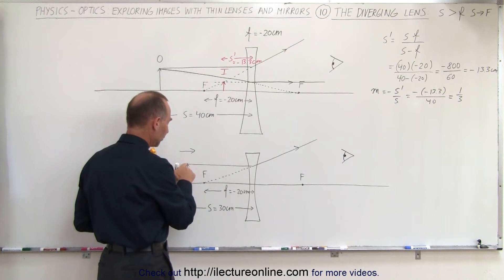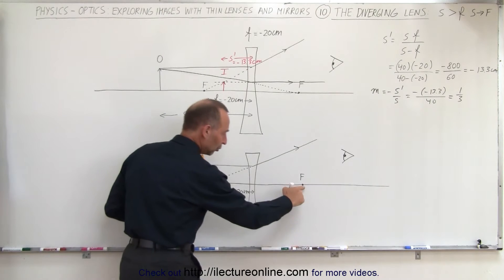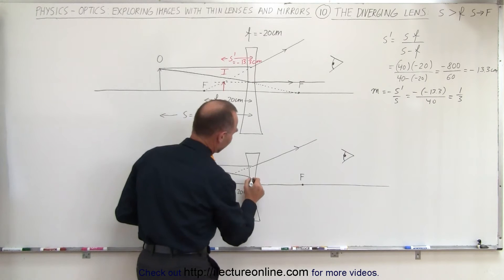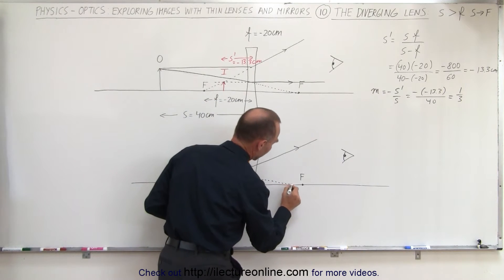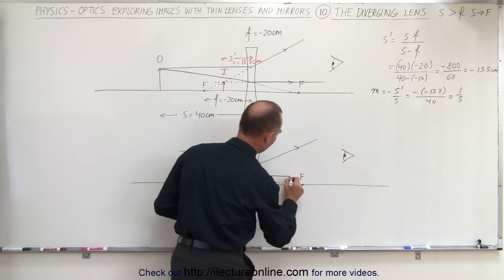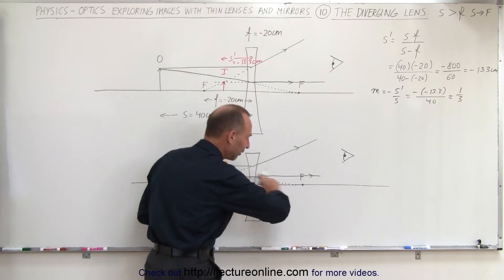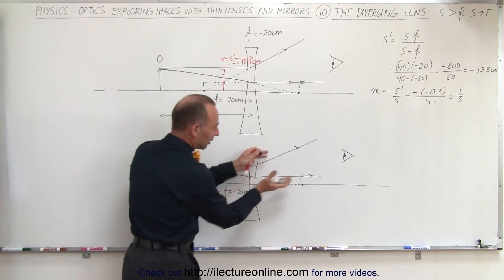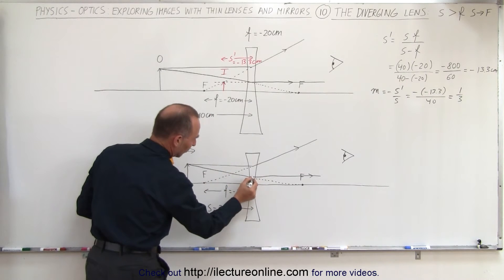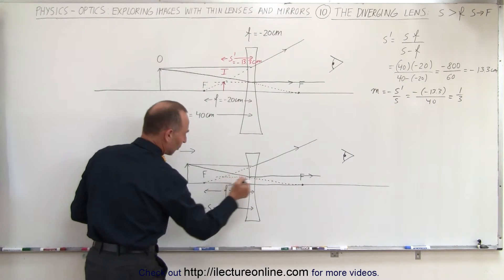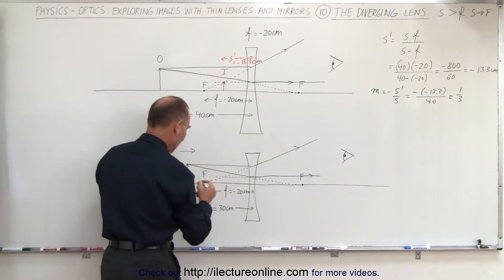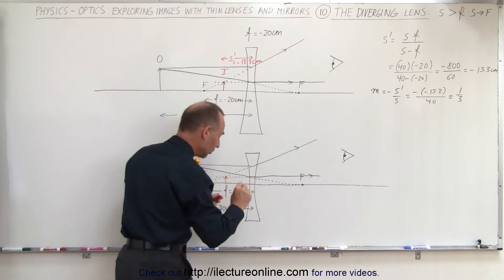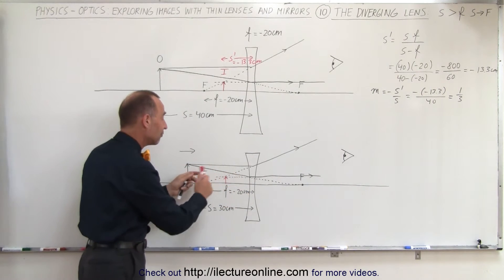The second ray is drawn from the top of the object toward the mirror image of the focal point on the other side. Normally the ray would continue on to the focal point, but the lens will diverge the ray in this direction. The observer sees those two rays apparently coming from back here — the brain projects out where the rays appear to be coming from and places an image where those two rays seem to meet. They don't actually meet there, so that makes it a virtual image.